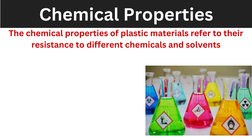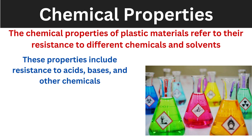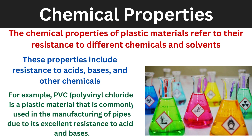In chemical properties, we check whether our material is reactive or resistive to chemicals. Chemical properties refer to the material's resistance to different chemicals or solvents, including acids, bases, and other chemicals. For example, PVC — polyvinyl chloride — is a plastic material generally used in the manufacturing of pipes due to its excellent resistance to acids and bases.